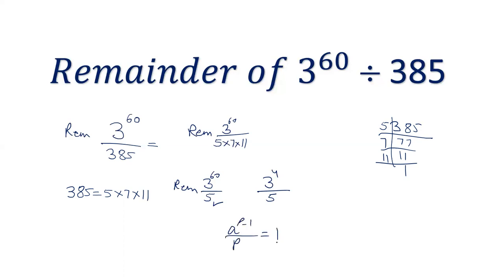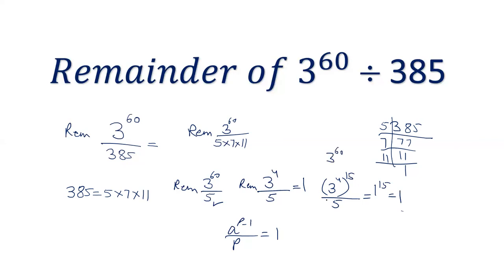We can check it also. 3 power 4 is 81. 81 divided by 5 will give the remainder as 1. And therefore, 3 power 60 can be written as 3 power 4 raised to the power 15. This will be 1 power 15 by the property of remainder, which is 1. So the remainder when 3 power 60 is divided by 5 is 1.